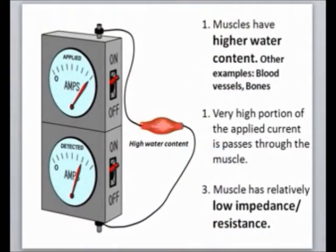This means fat tissues or adipose tissues have higher resistance — in other words, higher impedance. Now for tissues with high water content, such as muscle tissue, blood vessels, or bones — since there is higher water content, even with the same applied current, a very high portion passes through. The detector receives a much better portion, meaning muscles have very low resistance, or very low impedance.